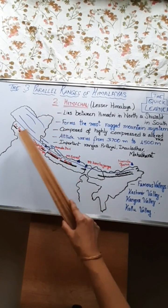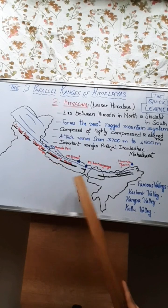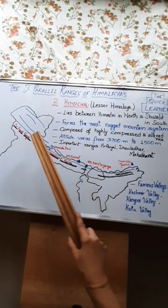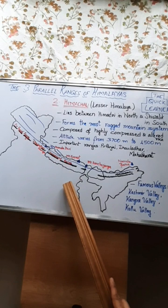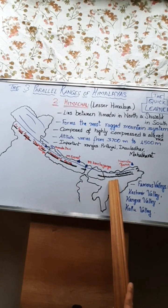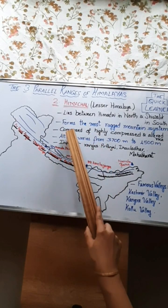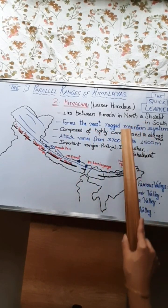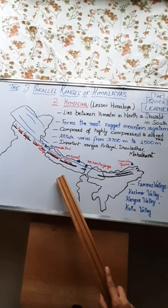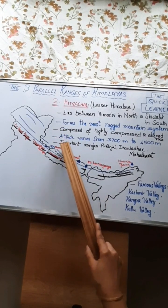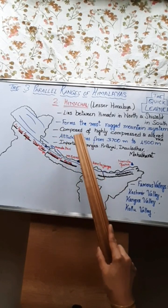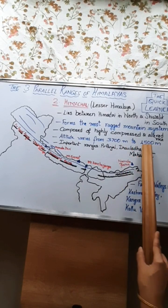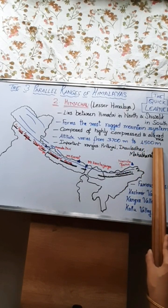As you can see, this is not a continuous mountain range like the previous one and it forms the most rugged mountainous system, that's why the representation here is like this. These mountains are composed of highly compressed and altered rocks, that is, they are composed of metamorphic rocks, and the altitude of these mountains varies from 3700m to 4500m.